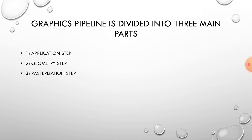The next step is the geometry step. The geometry step is responsible for the majority of the operations with polygons and their vertices with the vertex pipeline. It can be divided into five tasks, depending on the particular implementation of how these tasks are organized as actual parallel pipeline steps.